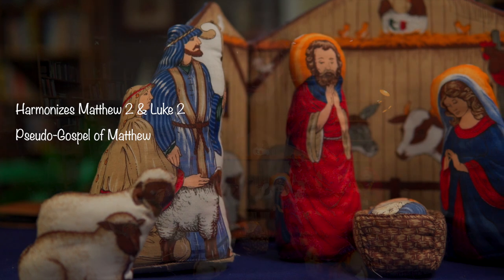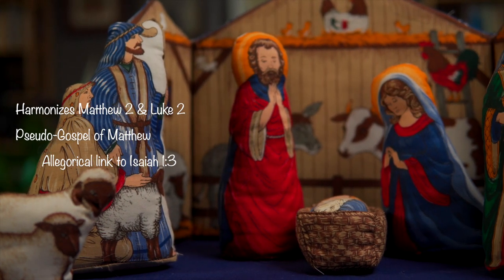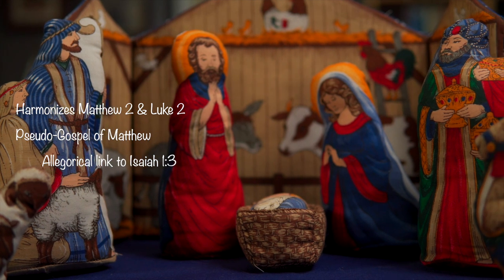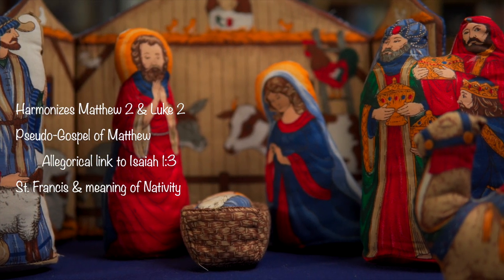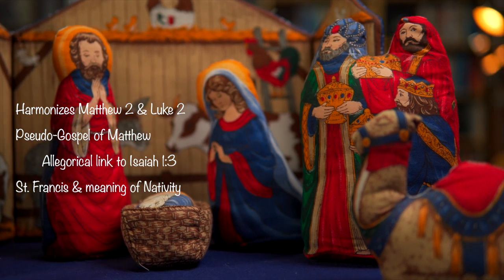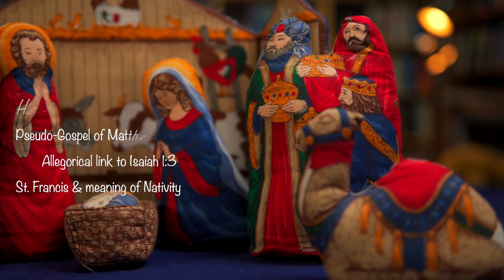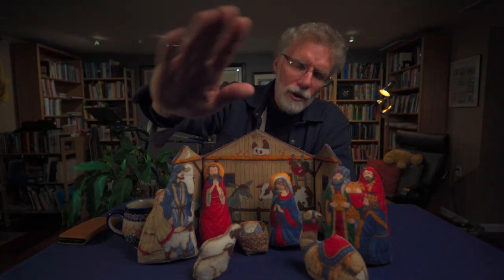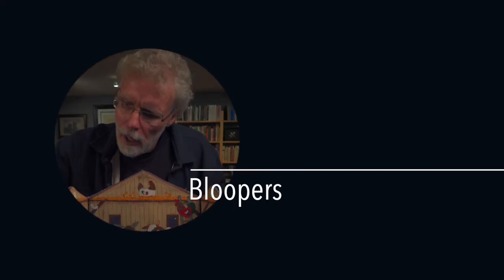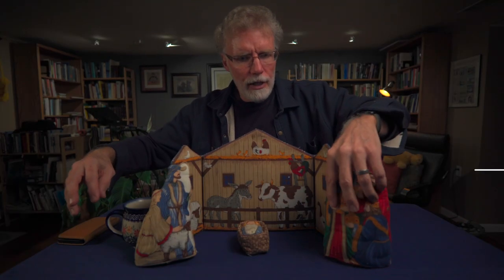I hope this little dive into the history of the nativity scene has helped you understand how complex this little depiction is. It takes elements from Matthew and Luke and combines them together — harmonizes them. It picks up the allegorical connection to Isaiah 1:3 to bring the ox and the ass into the story. And it reminds us that when God came into the world, he did not come with power and wealth, but in poverty and simplicity. As you go through this Christmas season and approach Epiphany, I will leave you with the word of peace.